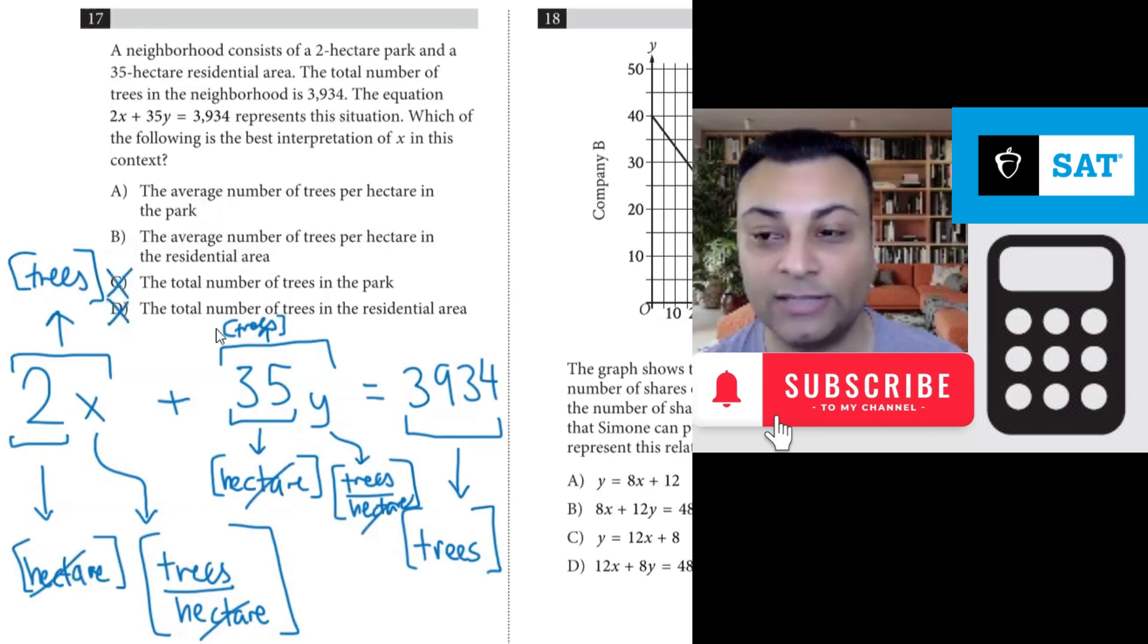So now we have to worry about whether x is for the park or the residential area. But it's next to the 2, and the 2 is the 2-hectare park. So it's the park answer, not the residential area. So the answer is A.